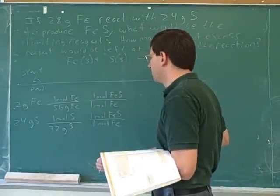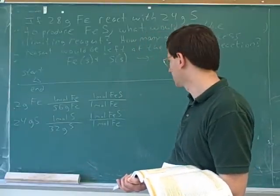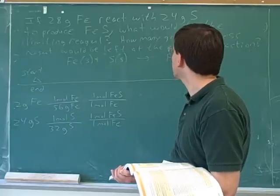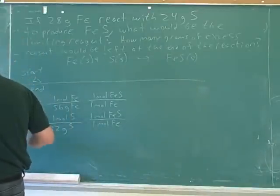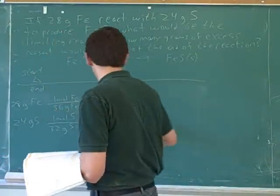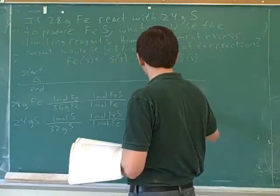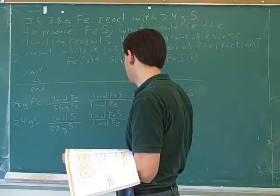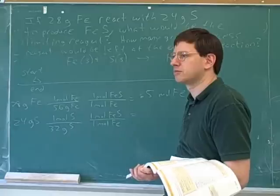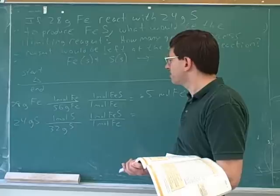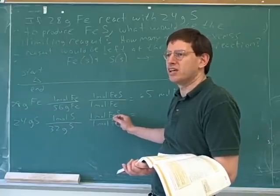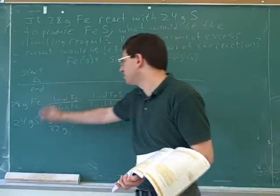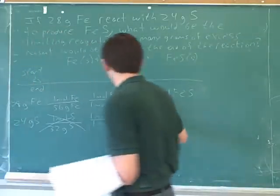Based on our molar approach, who is the limiting reagent? The iron. We got 28 grams, not 2 grams, so 28 divided by 56 gives us 0.5 moles of iron sulfide. But from sulfur we'd produce 0.75 moles. As soon as you see 0.75 is bigger than 0.5, you can cross that out. 24 grams of sulfur is more than 1.5 times 32, so we're going to run out of iron before we run out of sulfur. This gives us the limiting reagent.